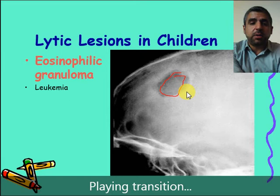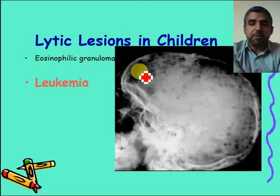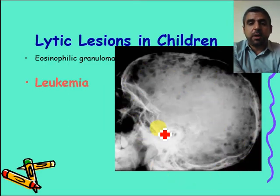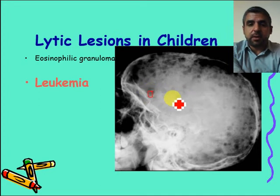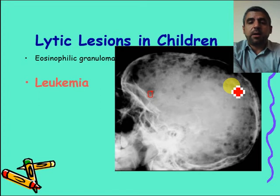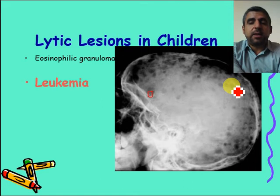If there are multiple punched-out lesions fused all over the skull — as seen in this skull x-ray with multiple lytic lesions — these are more aggressive types of lesions. In this case it was leukemia.